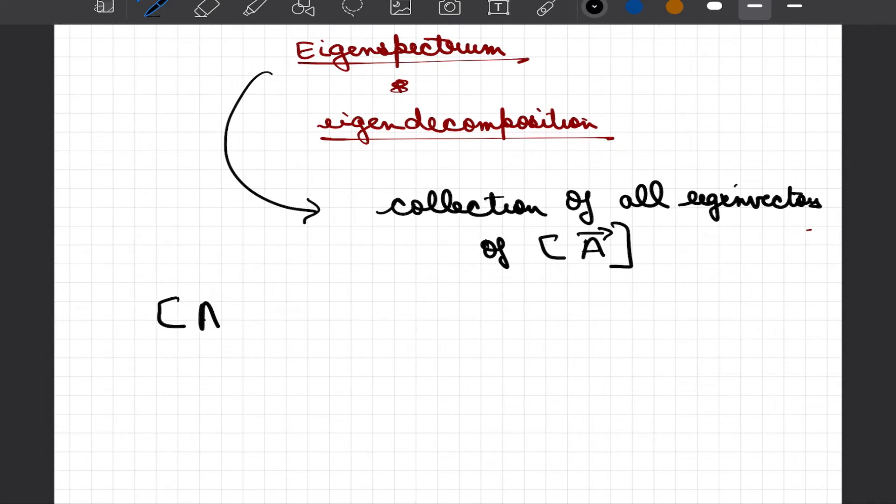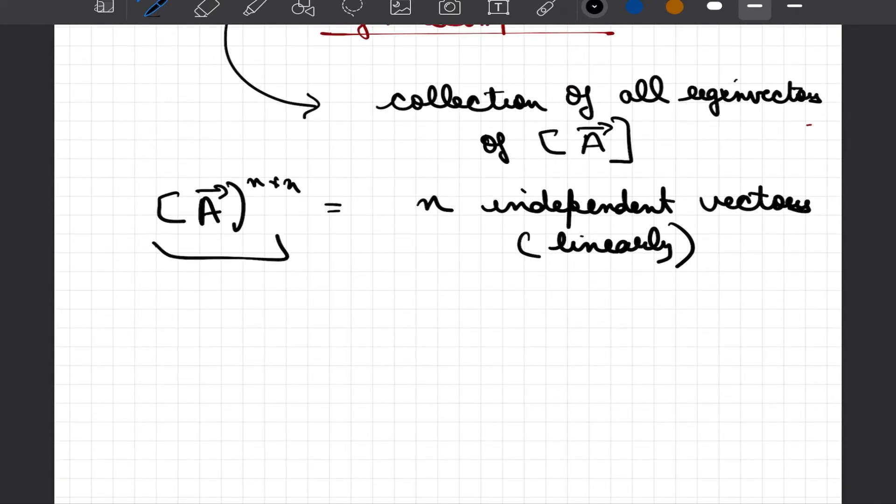We say that A is n cross n, and if there are n independent linearly independent eigenvectors associated with a matrix of size n cross n, we say that our matrix is non-defective.